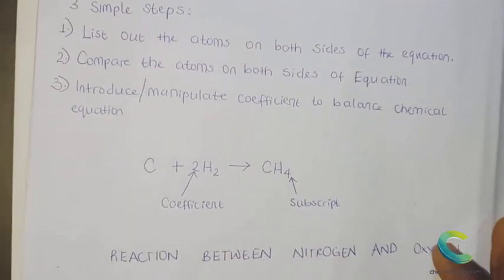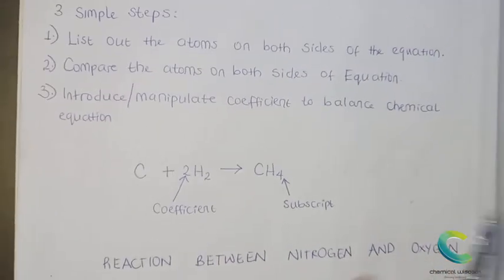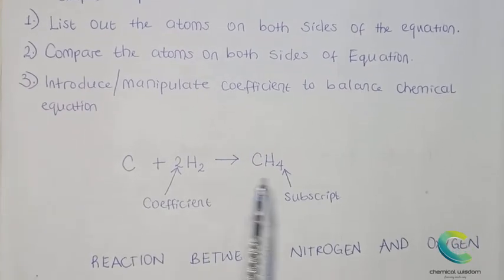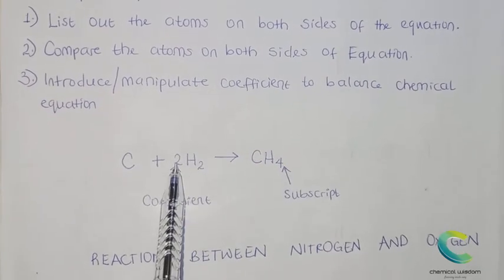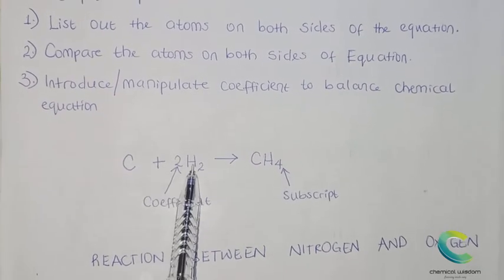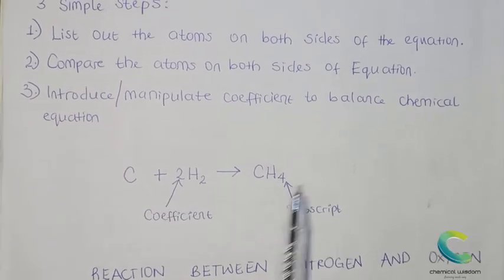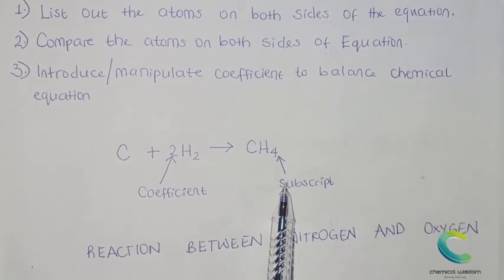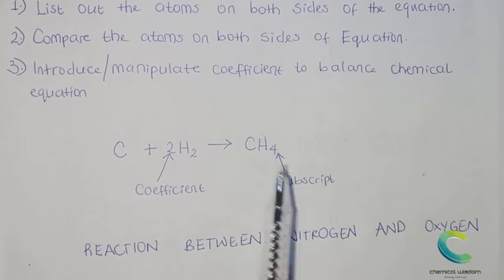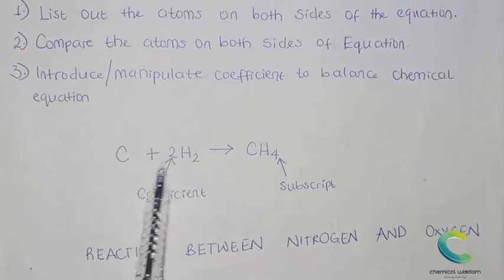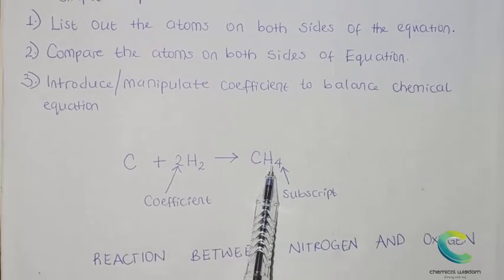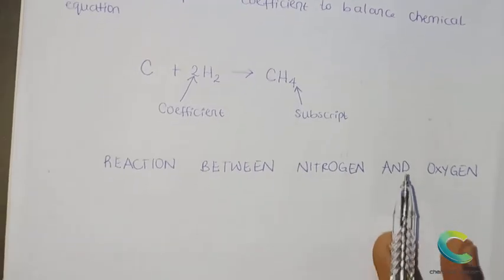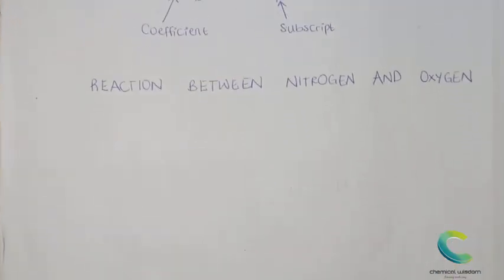There's a sample equation here — the reaction between carbon and hydrogen to produce methane. The number in front of atoms are called coefficients, and the number at the foot of atoms are called subscripts. In balancing equations, we are going to be manipulating the coefficients, not the subscripts. The subscripts stay constant.